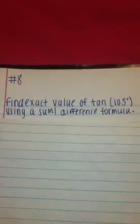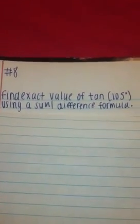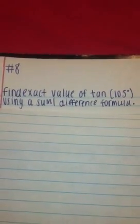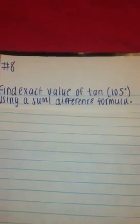Find the exact value of the tangent of 105 degrees using a sum or difference formula. In order to do this, you need to find two degrees that add up to 105 degrees that are on the unit circle, so they are easy to work with.